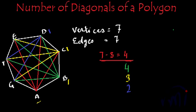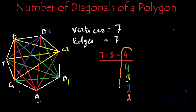And now we will take point E and try to draw diagonals. So I am going to take orange color. From point E to D is not possible, from E to F is also not possible. Point E to C is already drawn in yellow color, and E to B is drawn in green color, and E to A is already drawn in red color. So I can draw only one diagonal from point E to point G. So the number of diagonals drawn in orange color is 1. So these are the unique number of diagonals which can be drawn in the case of a polygon of 7 vertices or 7 edges.